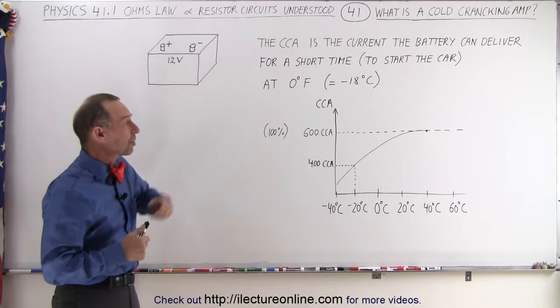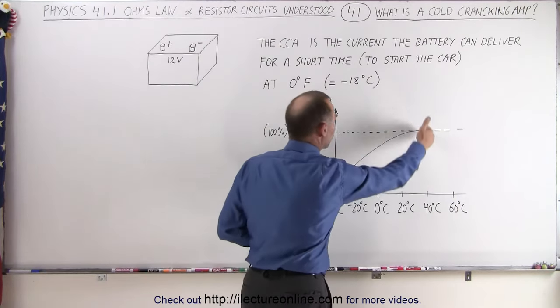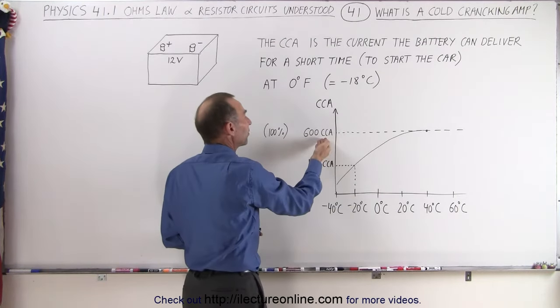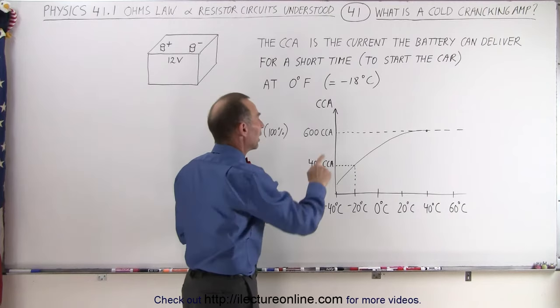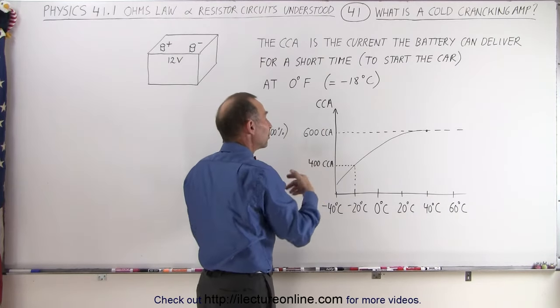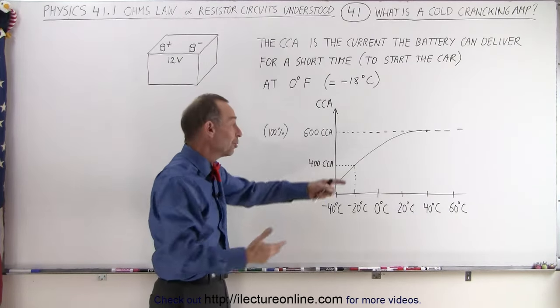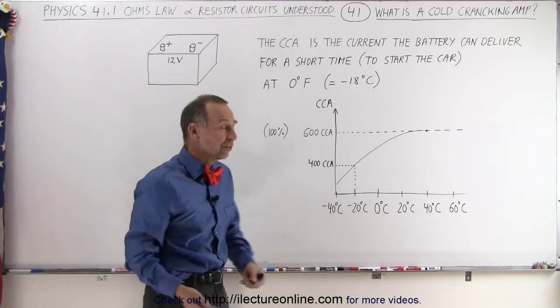So here we have a schematic of that. Let's say that under normal warm conditions, the battery provides, let's say, 600. Well, it wouldn't then be cold cranking amps. It would be cranking amps because it wouldn't be cold at 40 degrees, for example.